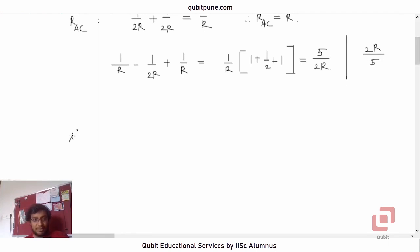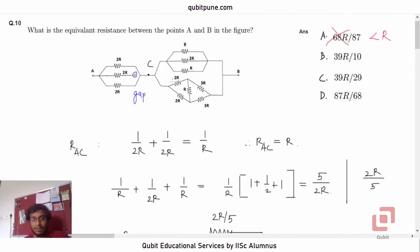So basically we now have got this: between A and C we have got a resistance R now, and at C we have a split and the top branch of it has the resistance 2R by 5. This is B. So what remains to be found out is the one below.